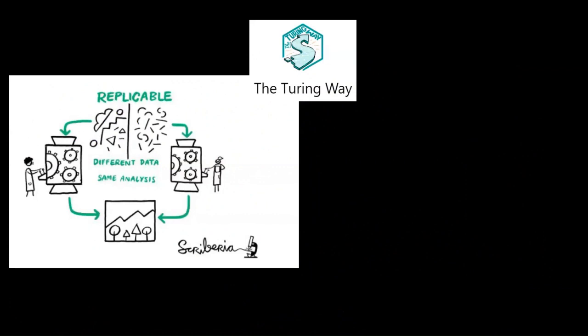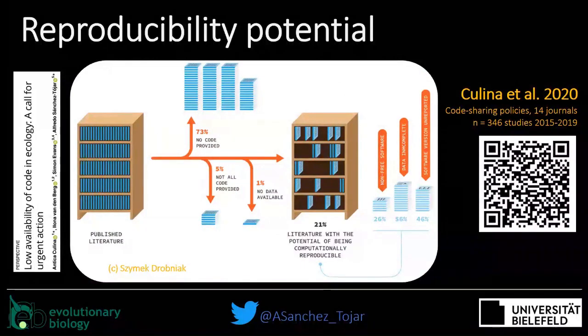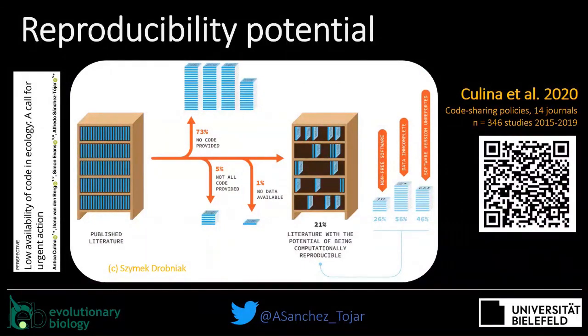A quick stop to make sure we're defining replication similarly in this talk. When I say replication, I mean using the same methods or analysis on different data to test the hypothesis. Whereas reproducibility means using the same data and the same analysis. I'm saying this because we can also look at reproducibility, and this has been done in ecology and evolution.